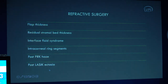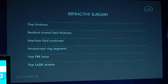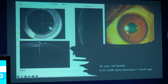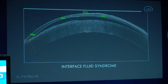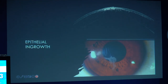Regarding refractive surgery, there are multiple uses of anterior segment OCT in post-LASIK patients: for flap thickness, residual stromal bed thickness, and complications like interface fluid syndrome, INTACS, and post-PRK haze. This patient underwent LASIK elsewhere about a month ago; on the OCT you will see a small hyperreflective area just below the LASIK flap — this ended up being debris and no intervention was required. Contrast this with interface fluid syndrome, where there is a significant hyperreflective space between the flap and the stromal bed, requiring immediate intervention.